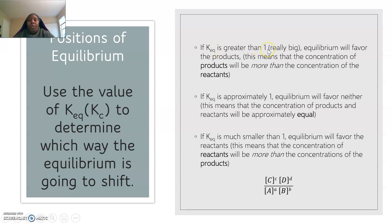If your equilibrium constant is greater than 1 — which is going to be really, really big — think about the equation: Keq equals concentrations of products over concentrations of reactants. If Keq is really big, the number on top, the numerator, is going to be really big. So if the equilibrium constant is greater than 1, equilibrium is going to favor the products, meaning there is a higher concentration of products than reactants.